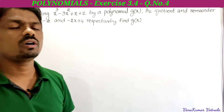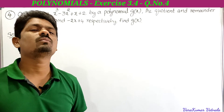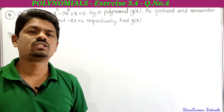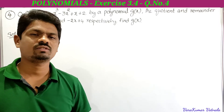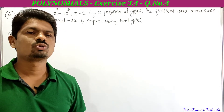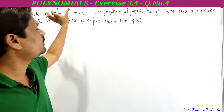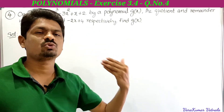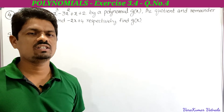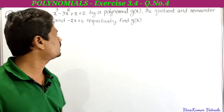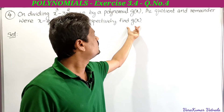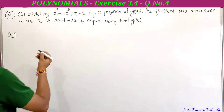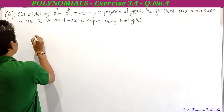Let the given polynomial be p(x). According to the division algorithm of polynomials, p(x) = g(x)·q(x) + r(x), where p(x) is the dividend, g(x) is the divisor, q(x) is the quotient, and r(x) is the remainder. We have to find g(x), the divisor.